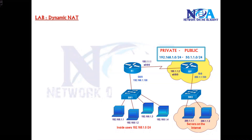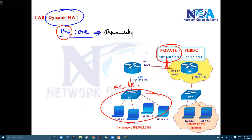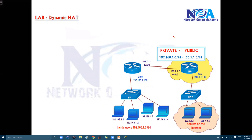Dynamic NAT allows one-to-one mapping, but this mapping is done dynamically. We need to define a range of private IP addresses — for example, the complete 192.168.1.0 subnet with around 200 users — and these should all get translated to any IP within a public range, say 50.1.1.1 to 50.1.1.254. Instead of defining each address individually, we tell the router to select dynamically from this private range and translate to the defined public range.